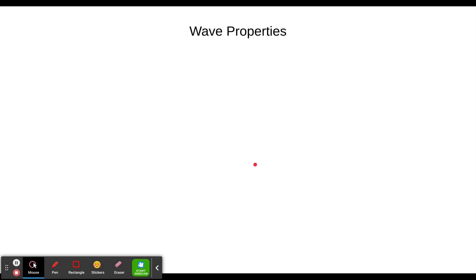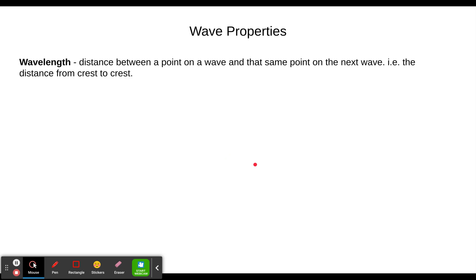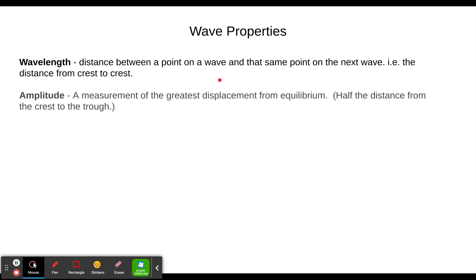First we need to review some of the definitions we've had. I'm going to go through them fairly quickly because if you've been moving through this with me you've done these several times. Wavelength is the distance between a point on a wave and the same point on the next wave, such as from crest to crest.